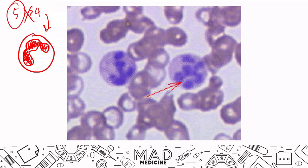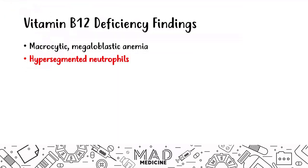It doesn't mean exactly five lobes — it could be six, seven, or more, depending on the slide quality. The key point is they can't progress further into their mature state, and hence you see these immature neutrophils in the peripheral smear. That's very important.